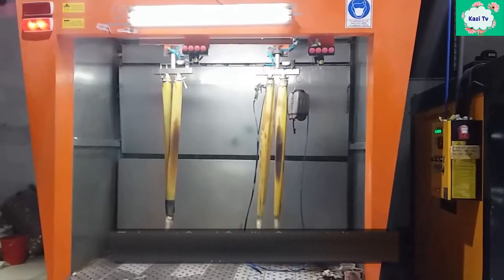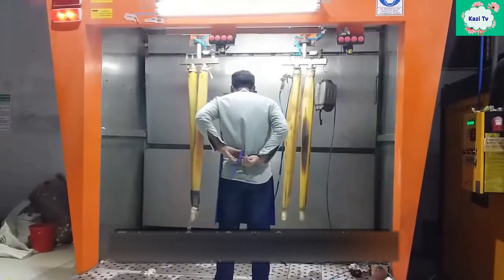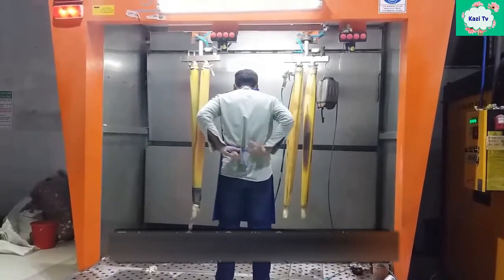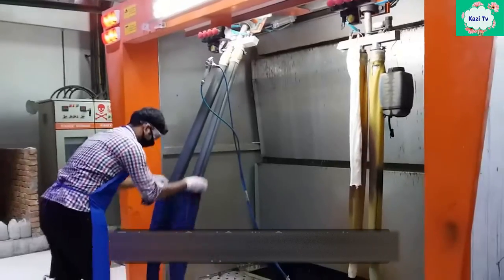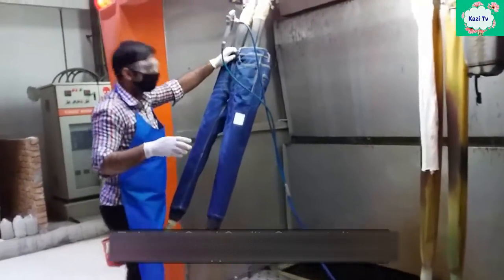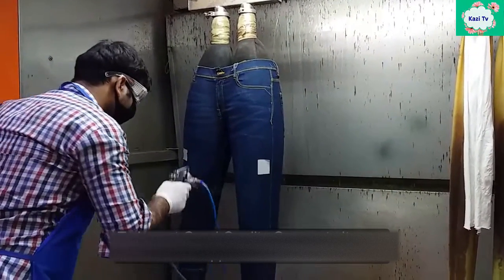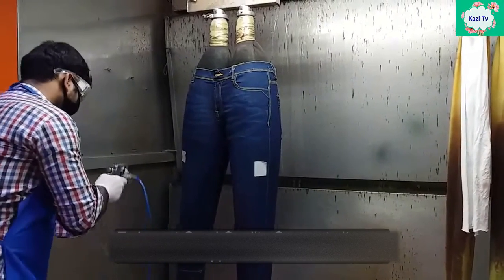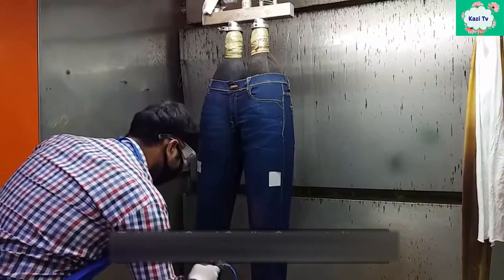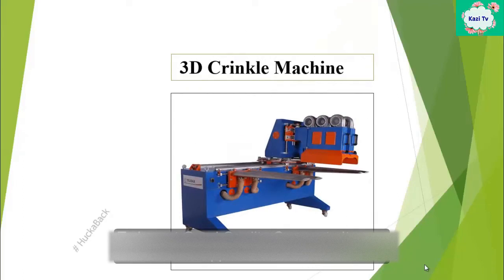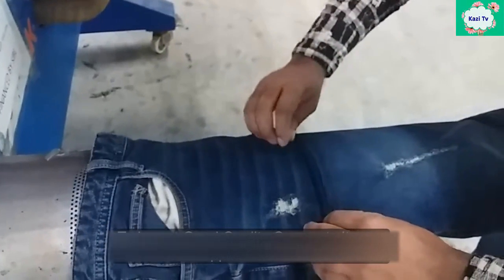PP spray cabin: this is the cabin that contains a spray gun and rubber dummy. At first, the garments are put on the dummy and then PP solution is sprayed by the gun. This cabin has two or more exhaust fans which exhaust the dust or PP smell from the cabin. Potassium permanganate is hung inside the cabin by a bucket; when you start to spray, the solution comes from the bucket with the help of air pressure.